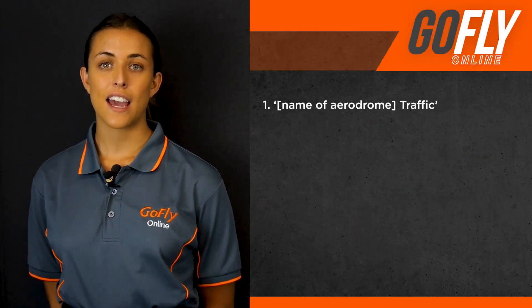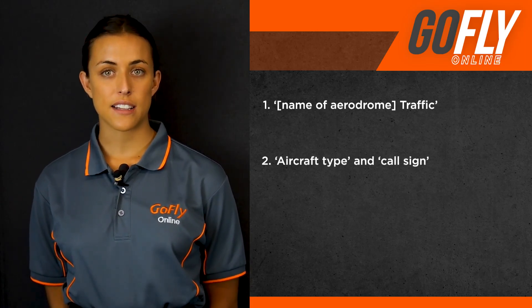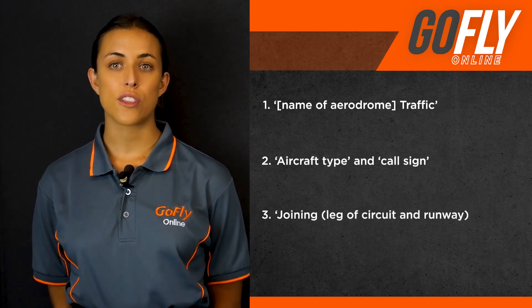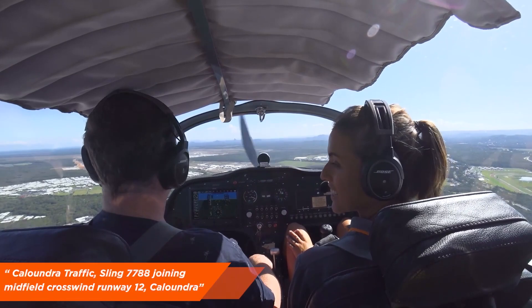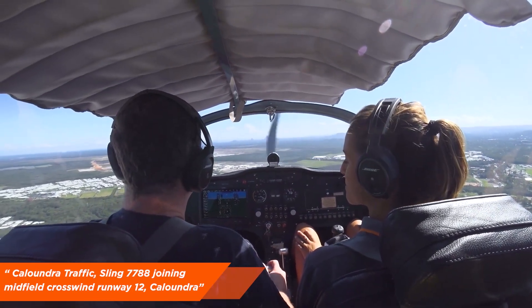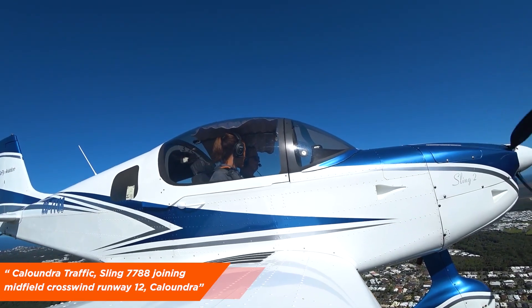It is also recommended to give a call when joining the circuit area. Let's assume we are going to join crosswind for runway 12 at Caloundra. Give the call at least 10 seconds before you join the circuit to give other aircraft a chance to hear your call and get back to you if required. The call would be the name of the aerodrome, followed by traffic, aircraft type and call sign, and joining the leg of the circuit for the runway, followed by the name of the aerodrome. An example: Caloundra traffic, Sling 7788, joining midfield crosswind runway 12, Caloundra.